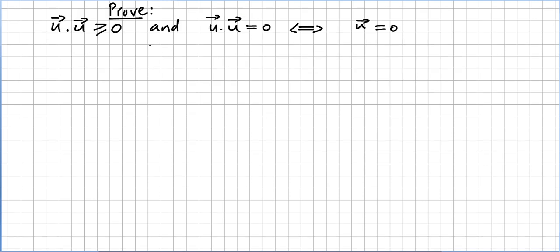Now we are asked to prove that u times u is greater than or equal to 0, and this is very important: the inner product u times u equals 0 if and only if u is the zero vector. The only way to get 0 on the dot product of a vector with itself is if u is 0. This is very important for metric spaces at the beginning of analysis courses, when you get the definition of a norm and absolute values.